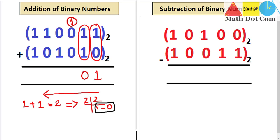We keep the 0 in the current column and move the 1 as a carry to the next column. Then 1 plus 0 plus 0 is 1, and 0 plus 1 in the next column is 1, then 1 plus 0 is 1, and 1 plus 1 is again 2, which is again replaced with 1 and 0. This is how you add two binary numbers.